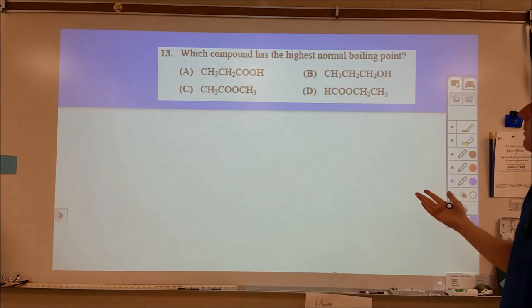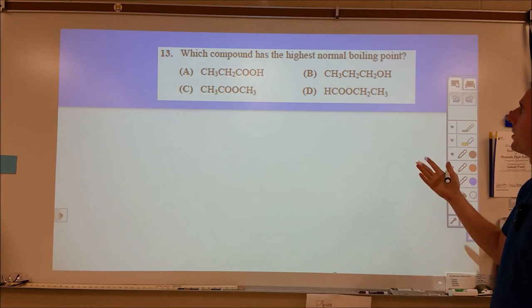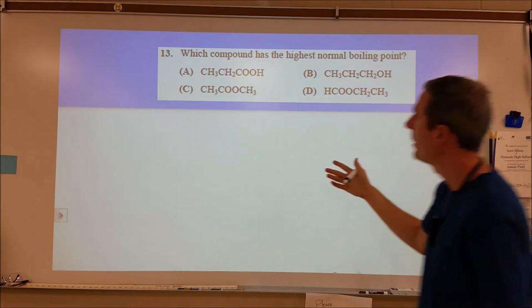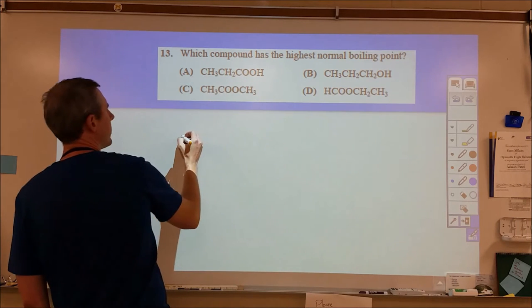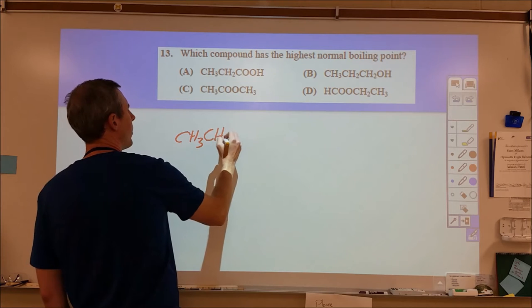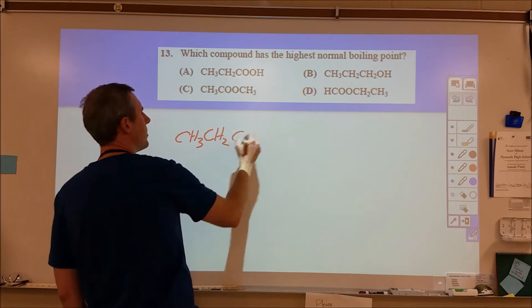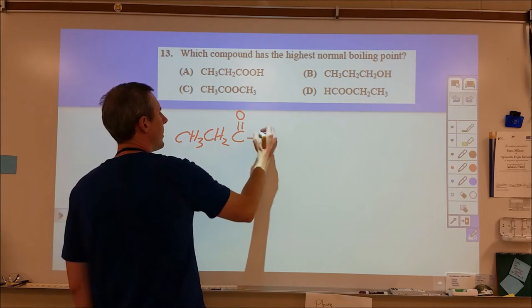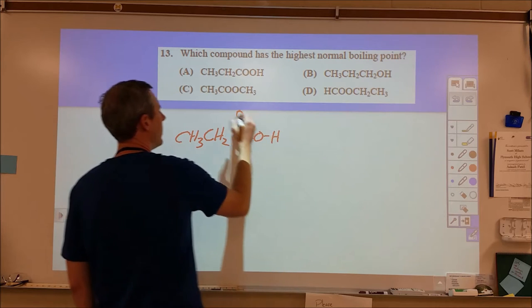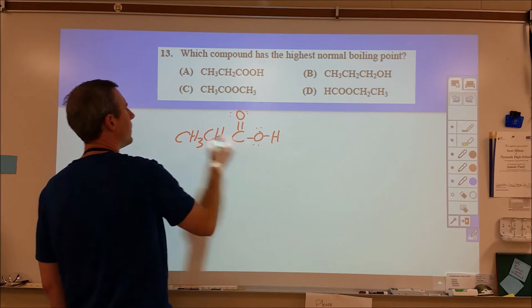Okay, for 13, we've got a bunch of organic chemicals. It wants to know which one is the highest normal boiling point. So real quick, I'm going to try and leave the condensed formula for the CH3s and CH2s. And here we have a carboxylic acid for A.